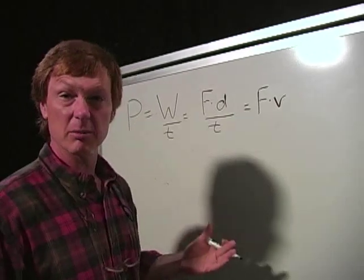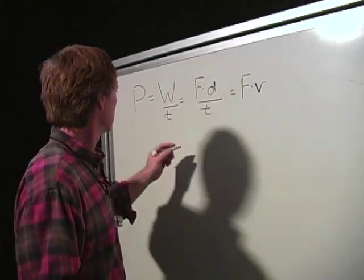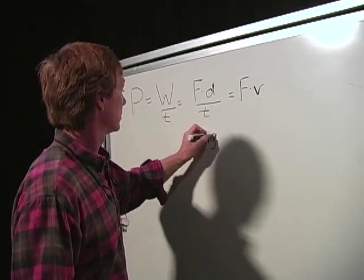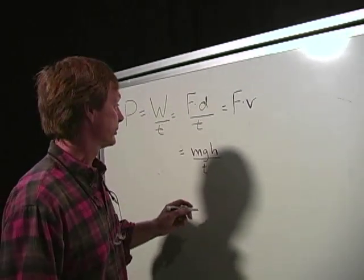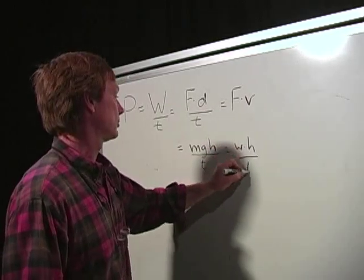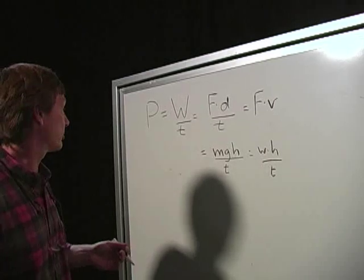If I'm raising a weight, some object, some mass, through a gravitational field, then it'd be mass times gravity - that'd be the force - times the height. And again, divided by the time. Or weight times height over time. So lots of ways to put together the linear mechanical aspects of it.